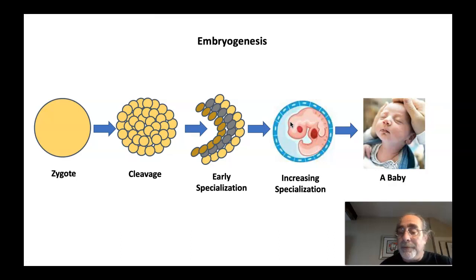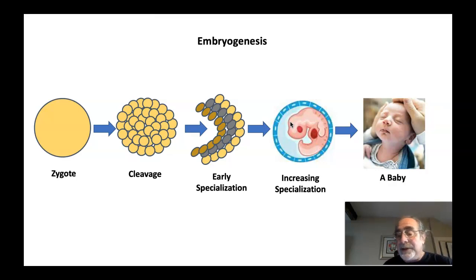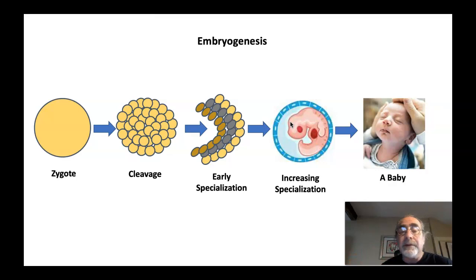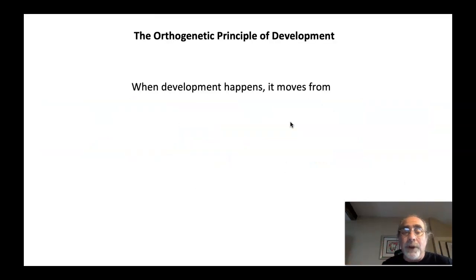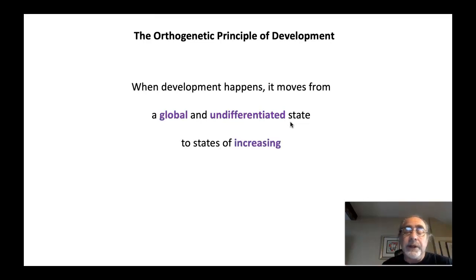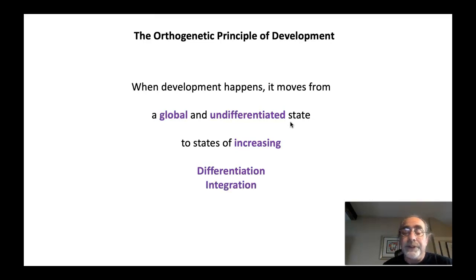What you see right before you is the orthogenetic principle in action. Right there, we see increasing differentiation, integration, and hierarchic integration. But let's break these words down so we have a very clear understanding. When development happens orthogenetically, it moves from a global and undifferentiated state to states of increasing differentiation, integration, and hierarchic integration. Let's define these concepts.